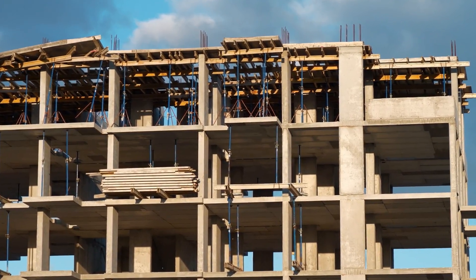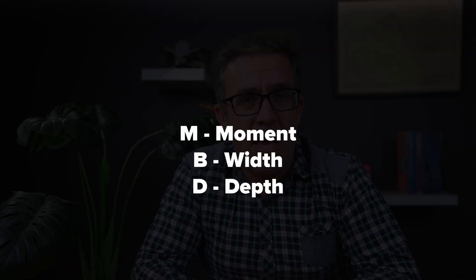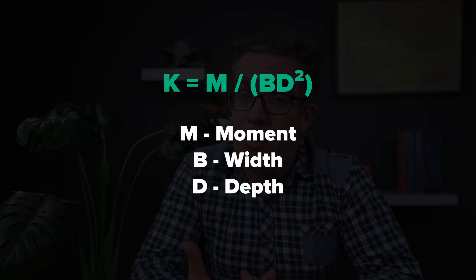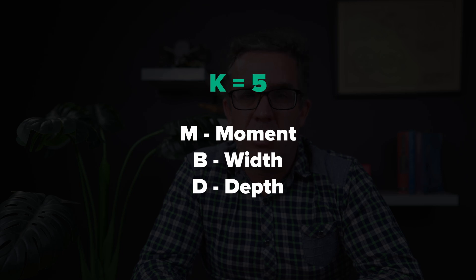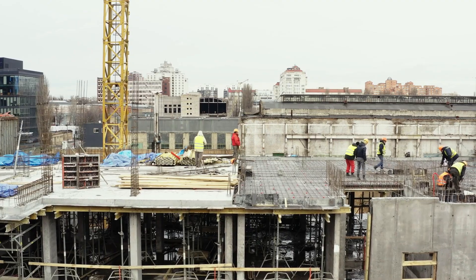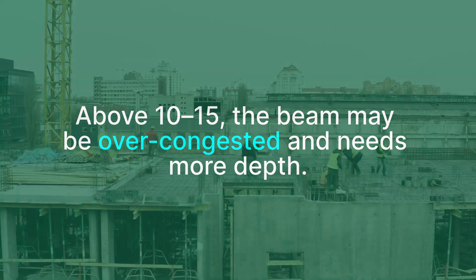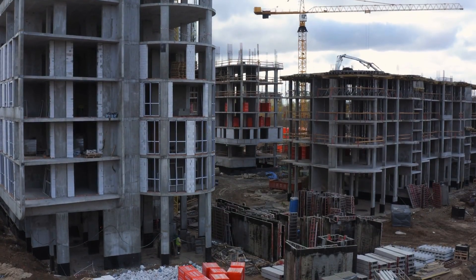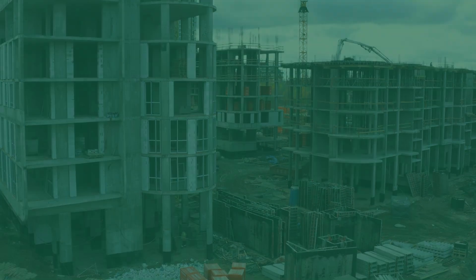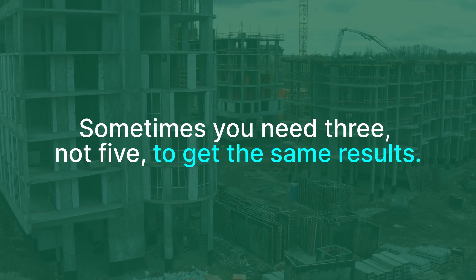There are other ways I'd also look at beam depths. With a concrete structure, I'll look at K. What is K? K is M on BD squared. Typically for a beam, I want to be aiming for K=5 for the most efficient design — that's a pretty sweet spot. If you want to really push it, for something not deflection governed, you might push that up to 10. But anything above 10 to 15, you're potentially looking at an over-congested beam that needs to be deeper. If you are deflection governed, you need to go back the other way — sometimes you need K=3 to get those same results.